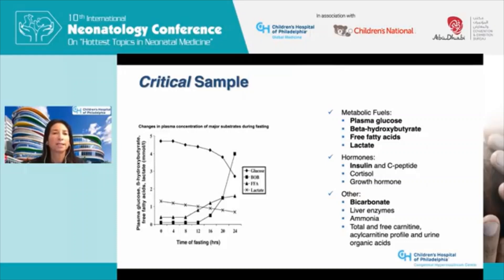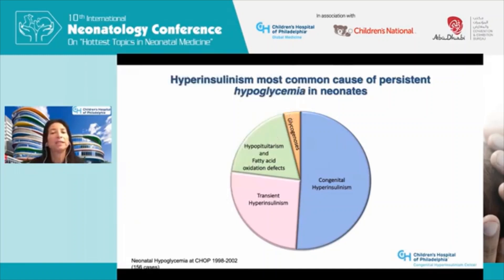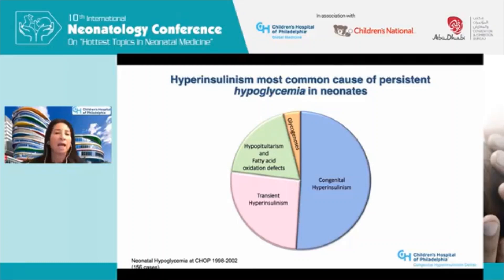Looking at the frequency of different disorders causing persistent hypoglycemia in neonates, as shown in this graph, about three-quarters have hyperinsulinism — either congenital or transient. The other quarter includes babies with fatty acid oxidation defects or glycogenosis. So we're going to talk for the rest of the time about hyperinsulinism.